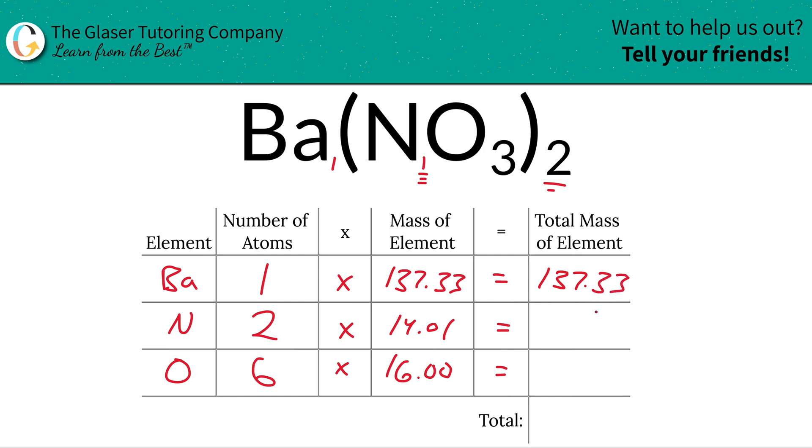The total mass now of nitrogen in the compound, each nitrogen is 14, multiplied by two. This should be about 28.02.